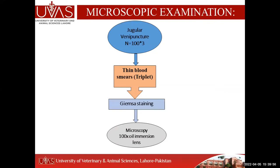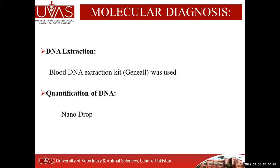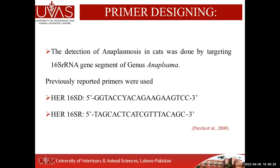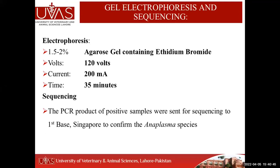For blood sampling, jugular vein puncture was performed and thin blood smears were made in triplicate, then Giemsa staining was done for oil immersion microscopy. For molecular analysis, blood samples were subjected to DNA extraction, followed by PCR using genus-based primers targeting the 16S ribosomal RNA gene. PCR-positive products were sent to First BASE Singapore lab for sequencing to confirm similarity of the identified pathogens.